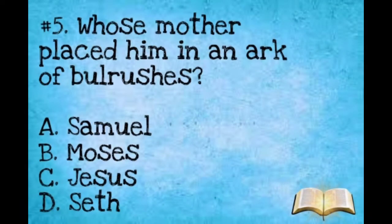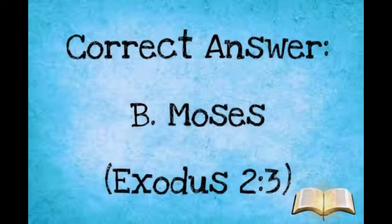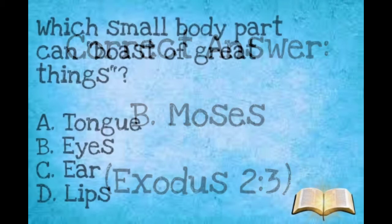Question number five: Whose mother placed him in a basket in the rushes? A: Samuel. B: Moses. C: Jesus. D: Seth. The correct answer is B, Moses.